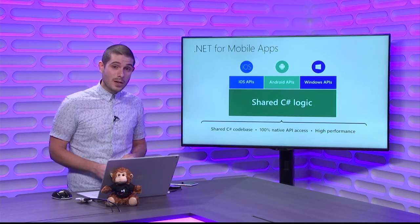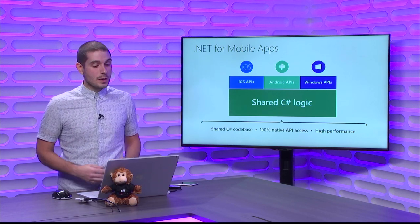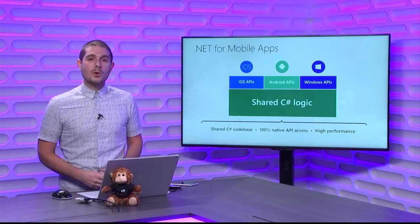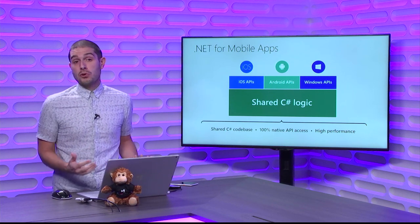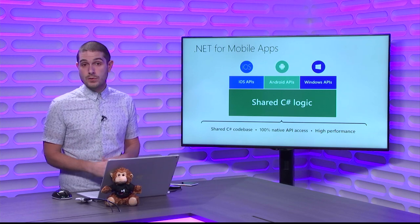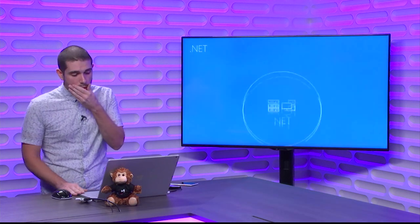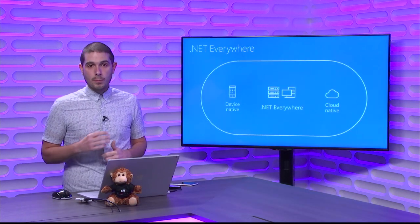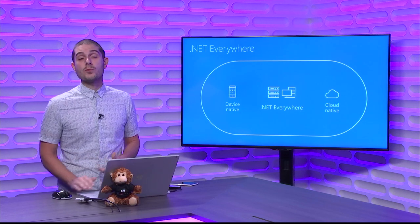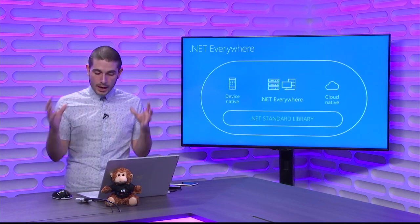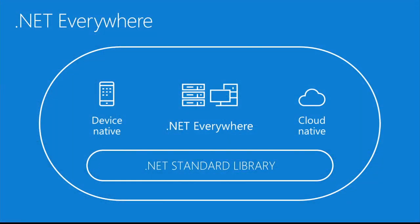You also get access to all the great iOS, Android, and Windows APIs. If there's something you want to do on iOS — Core Location, Core Bluetooth — same thing with Android: Google Play Services, Android support libraries — we give you access to everything, and everything compiles into a native application. You can deploy internally at your company or out to Google Play, the Apple App Store, or the Microsoft Store.